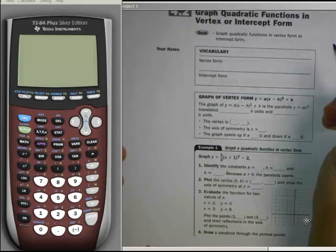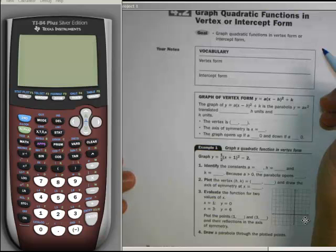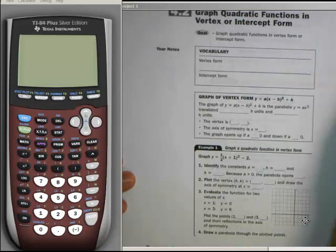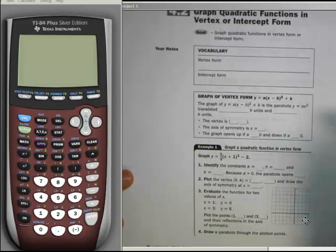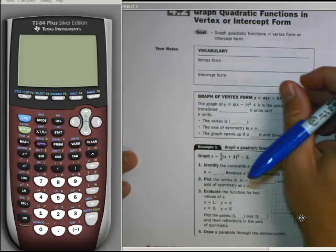Okay, welcome back. We are currently on section 4-2, and we're continuing our journey through the quadratic function. Today we're looking at vertex form and intercept form, two different kinds of forms for quadratic functions, just different ways you can write them, but they result in the same thing.